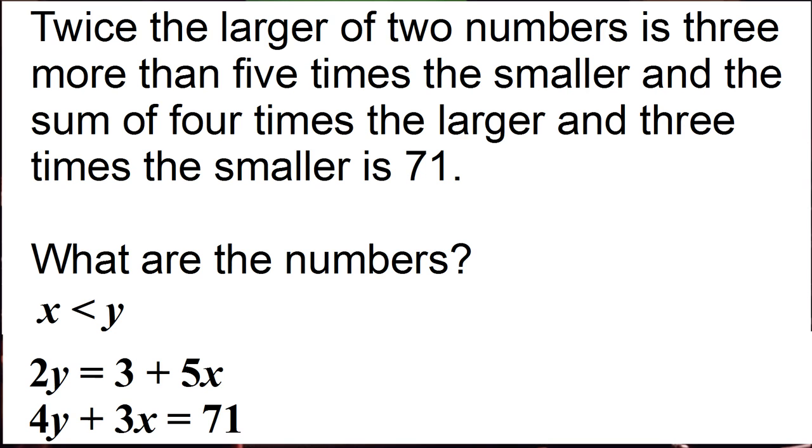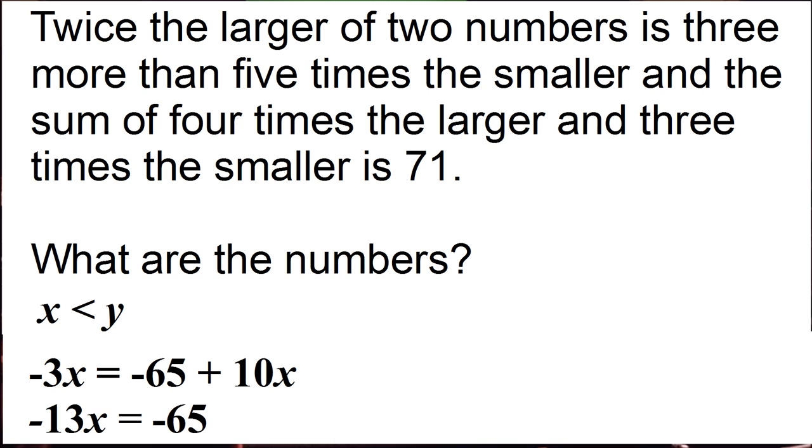So let's eliminate the y by multiplying the top equation by two. So we have four y equals six plus ten x. We can eliminate the four y by subtracting the second equation. So we're going to eliminate the four y and then we end up with negative three x equals negative sixty-five plus ten x. We'll group the x's over to one side and then we can solve that x is equal to five.